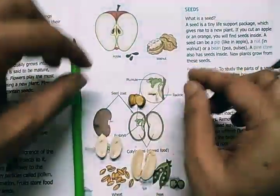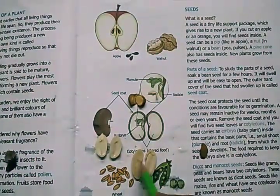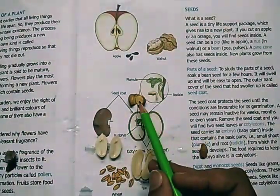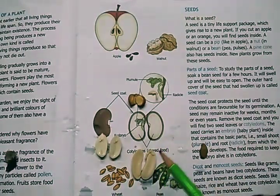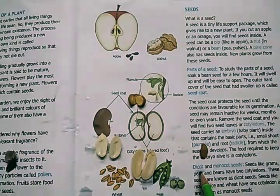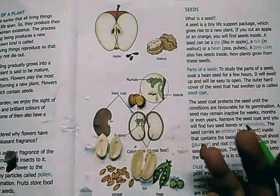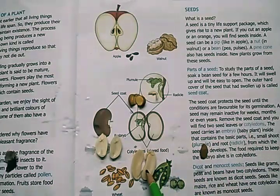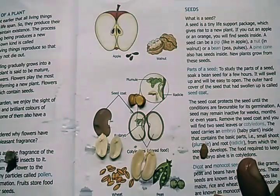There are two cotyledons in these seeds. Seeds which have two cotyledons — like gram, groundnut, kidney bean or rajma, badam, peas, and other beans — are called dicotyledonous seeds or dicot seeds. On the other hand, seeds like wheat, rice, and maize — if we open the seed coat, there will be only one cotyledon inside. Such kinds of seeds are called monocotyledon seeds.